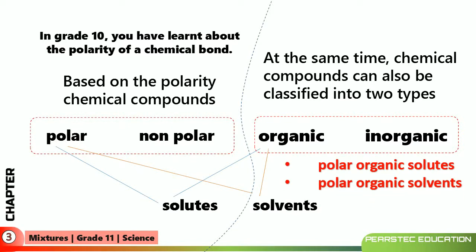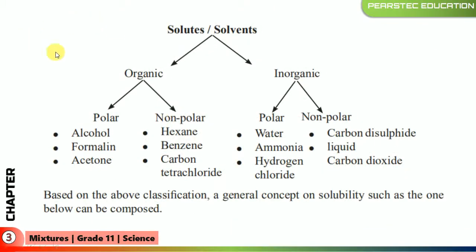When taking solutes and solvents, we can categorize them as polar organic, polar inorganic, non-polar organic, or non-polar inorganic. There is a very important chart from the book. Organic polar includes alcohol, formalin, and acetone. Organic non-polar includes hexane, benzene, and carbon tetrachloride. Inorganic polar includes water, ammonia, and hydrogen chloride. Inorganic non-polar includes carbon disulfide and liquid carbon dioxide. Based on this classification, a general concept on solubility can be composed.